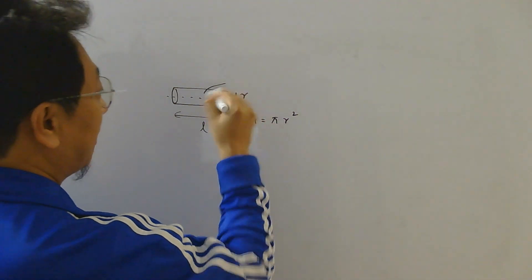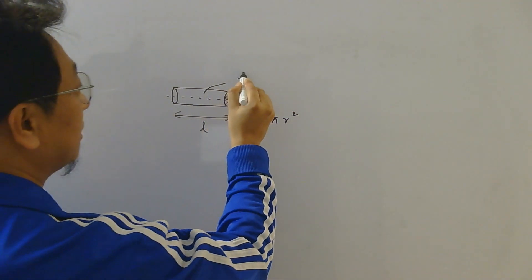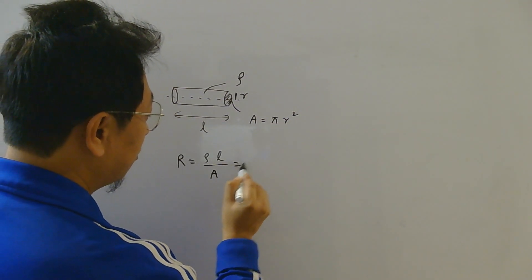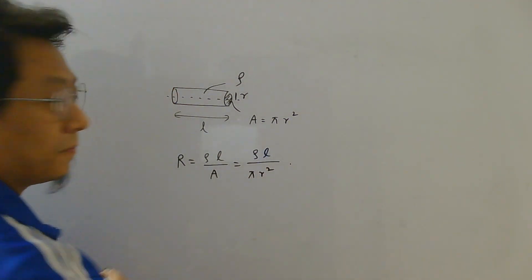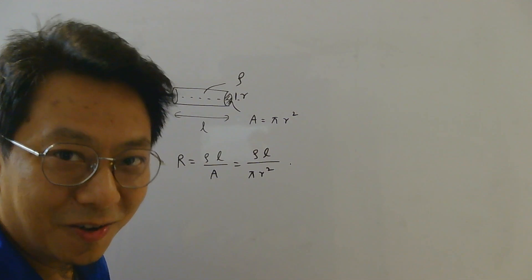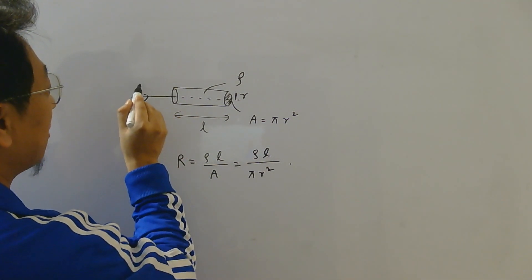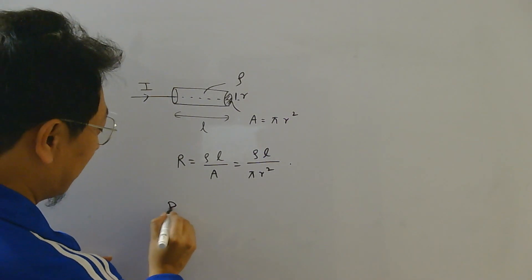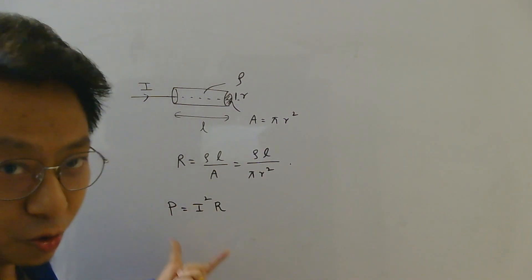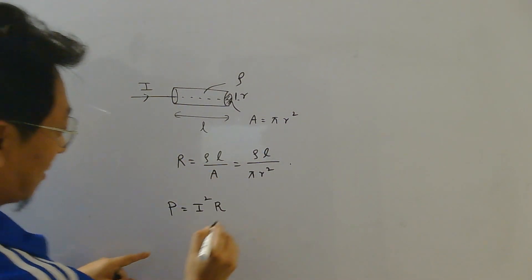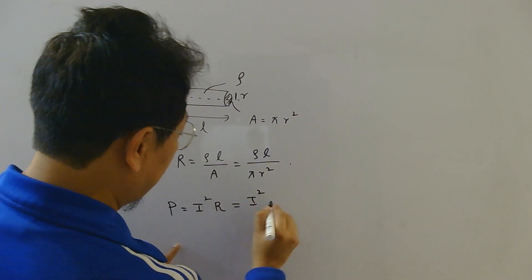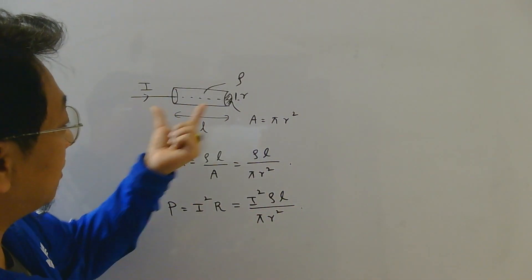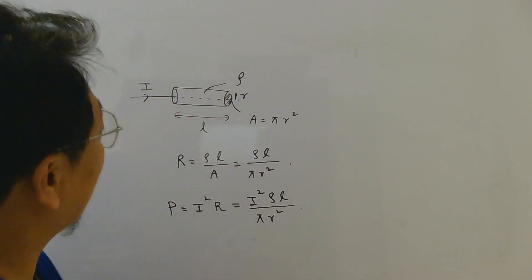This wire is made up of a material whose resistivity is ρ. Then the resistance of this wire is given by the formula ρL/A, which would be ρL / (πR²). When current I flows through this wire, the wire gets heated, and the power developed is given by the formula I²R, assuming the resistance remains constant. That would be equal to I² × ρL / (πR²). So this much power is dissipated in the fuse wire.